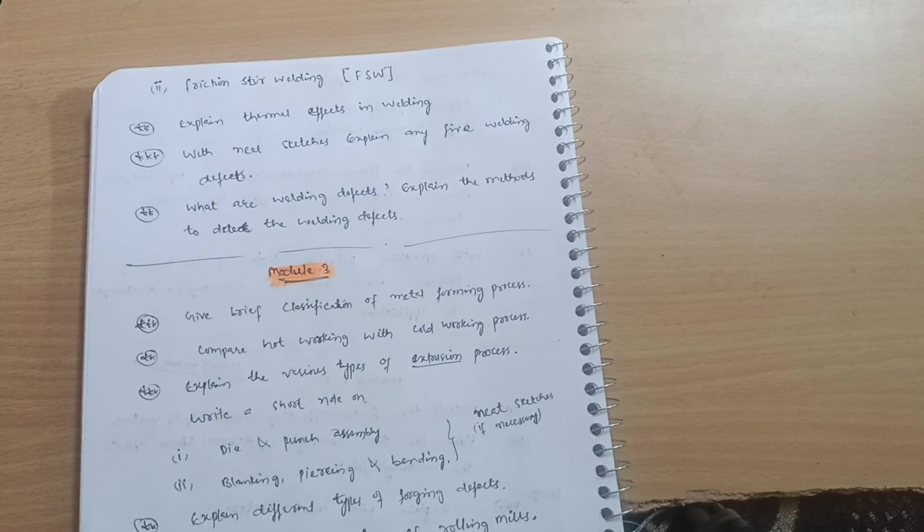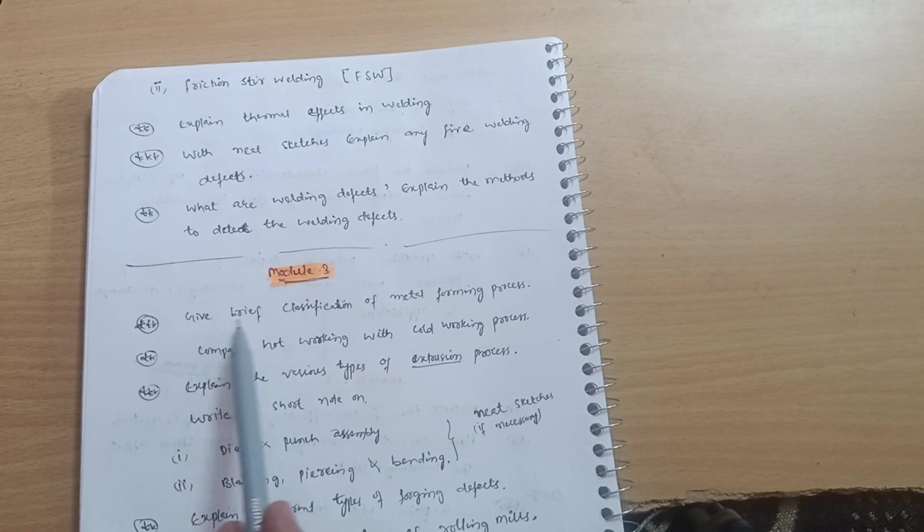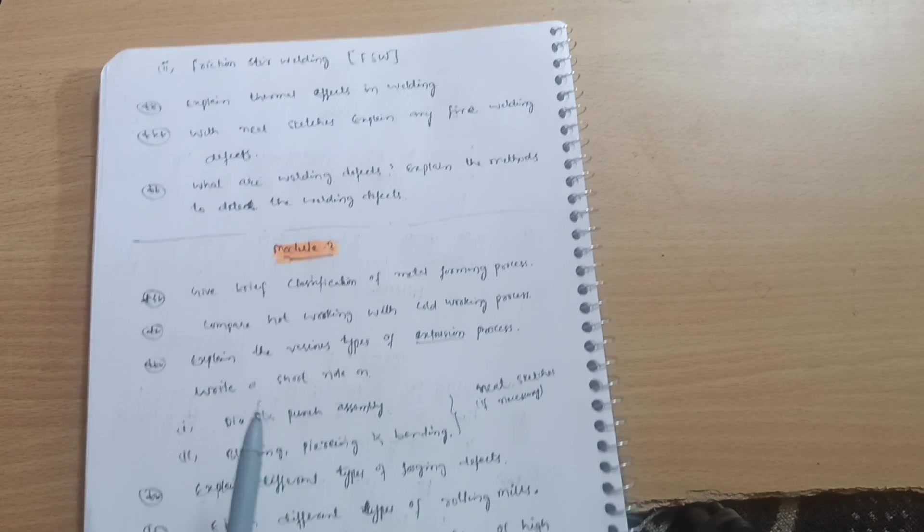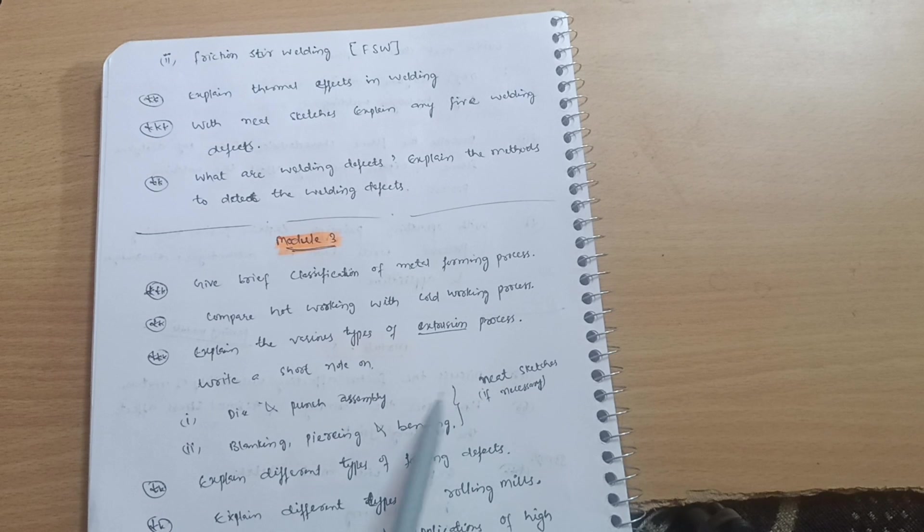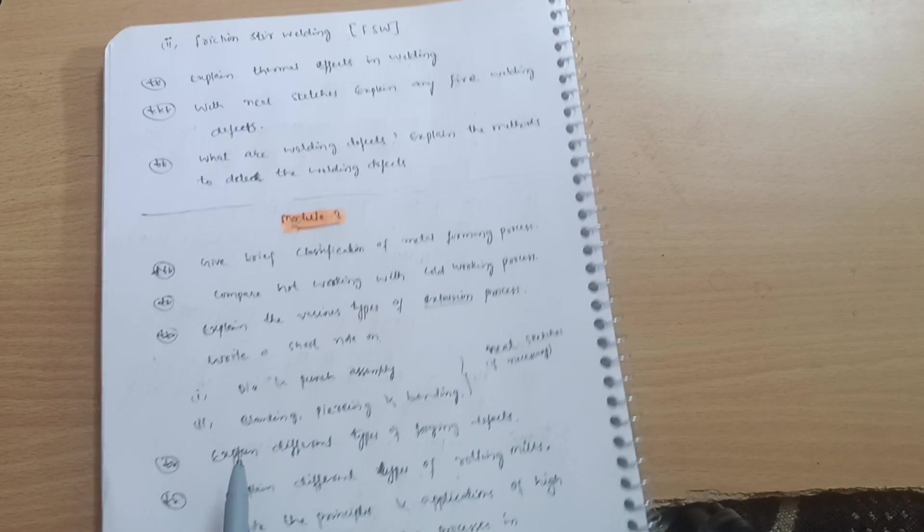Next is Module 3 in which you have to cover: give brief classification of metal forming process, compare hot working with cold working process, explain the various types of extrusion processes. Go through the extrusion process, definitely you have to go through. Then types of extrusion processes. Write a short note on die and punch assembly, blanking, piercing, and bending. Neat sketches if any, so you have to write down the sketch and short note on these particular processes.